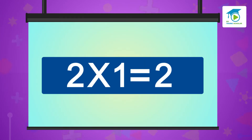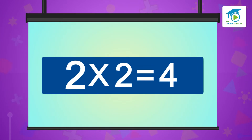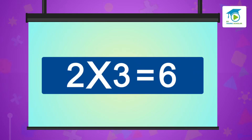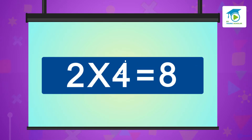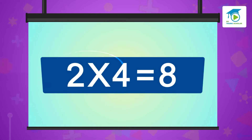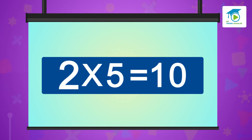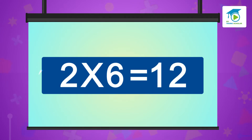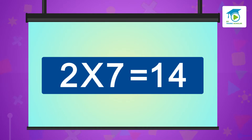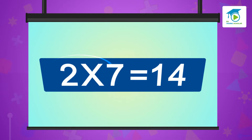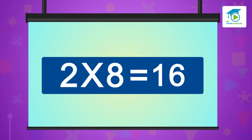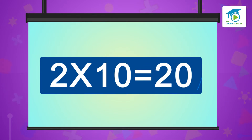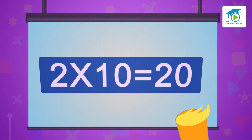Two ones are two, two twos are four, two threes are six, two fours are eight, two fives are ten, two sixes are twelve, two sevens are fourteen, two eights are sixteen, two nines are eighteen, two tens are twenty.